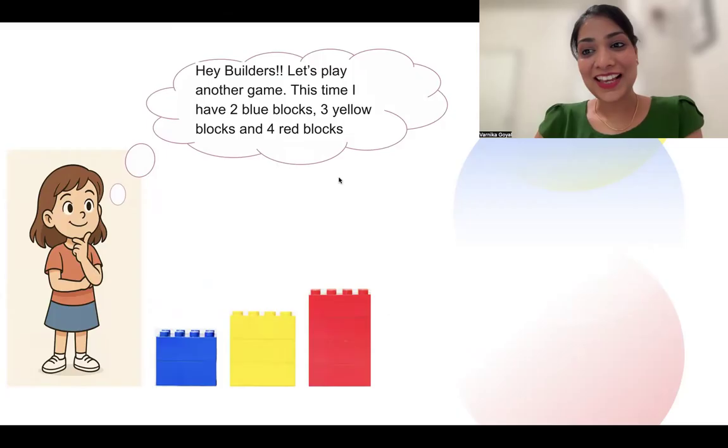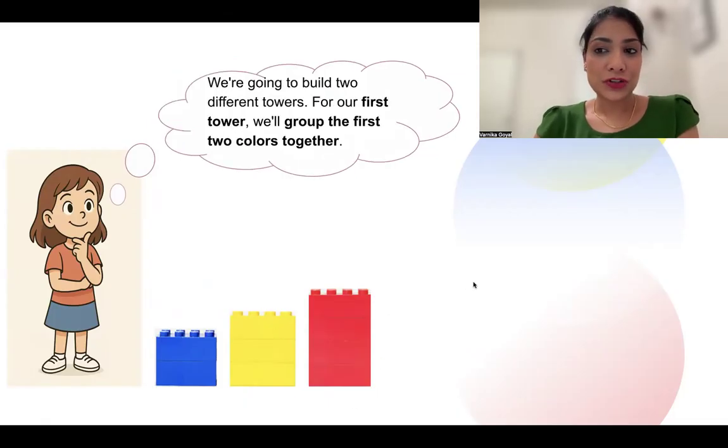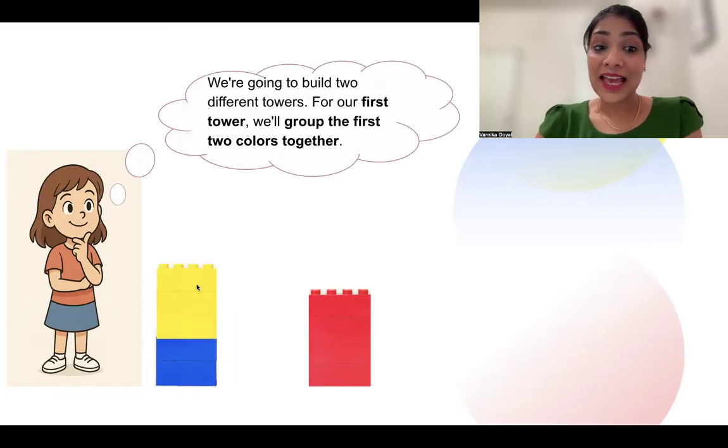Hey builders, let's play another game. This time I have two blue blocks, three yellow blocks, and four red blocks. We're going to build two different towers. For our first tower, we'll group the first two colors together. Let's go. We stack our two blue blocks and then our yellow blocks. How much is that? So 2 + 3 is 5. So this tower height is 5.